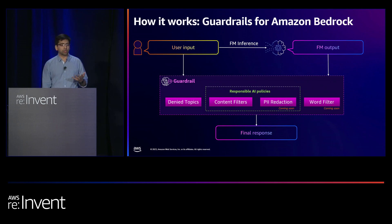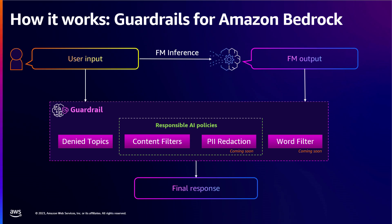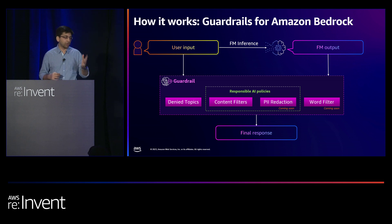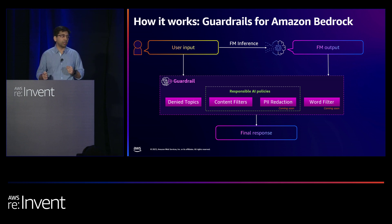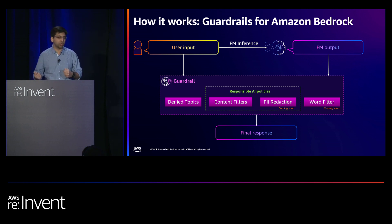Guardrails provide a range of policies and controls. Guardrails work by intercepting both the input prompts provided to the foundation model and the responses generated by the foundation model, vetting them against the policies defined within a guardrail. Each guardrail contains four different policies spanning denied topics, content filters, PII reduction, and word filters — with PII reduction and word filters coming soon. If there is a policy violation, the model response gets overridden by a pre-configured approved response, providing a safer and more appropriate response to end users.